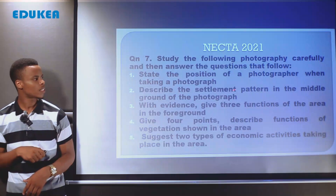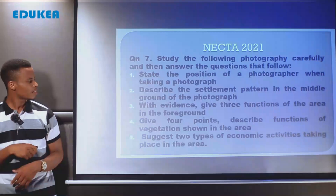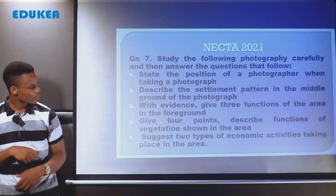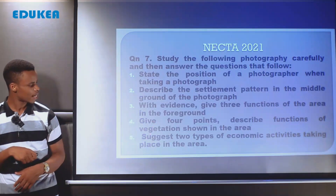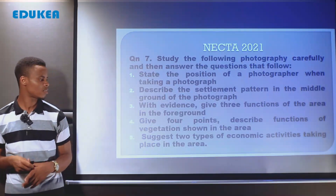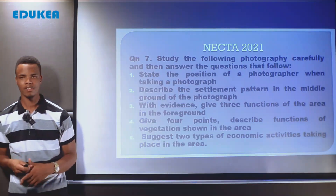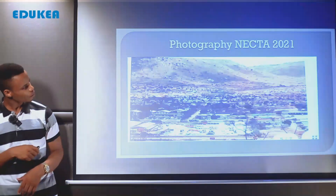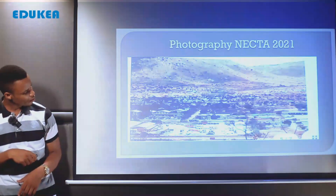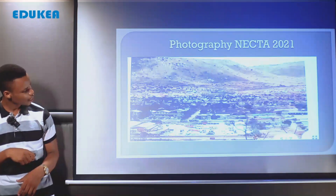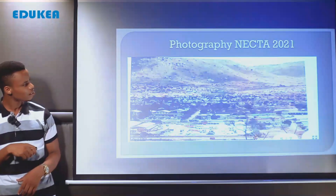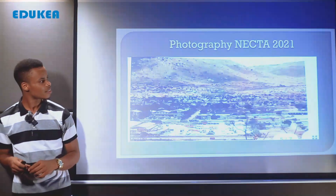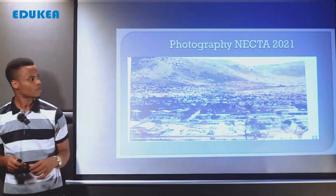To summarize: the first question requires showing the photographer's position; the second requires describing the settlement pattern in the middle ground only, not the whole photograph; the third requires giving the land use of the foreground with evidence; the fourth requires describing the function of vegetation; and the last requires suggesting at least two types of economic activities with evidence from the provided photograph. Now let us see the given photo.